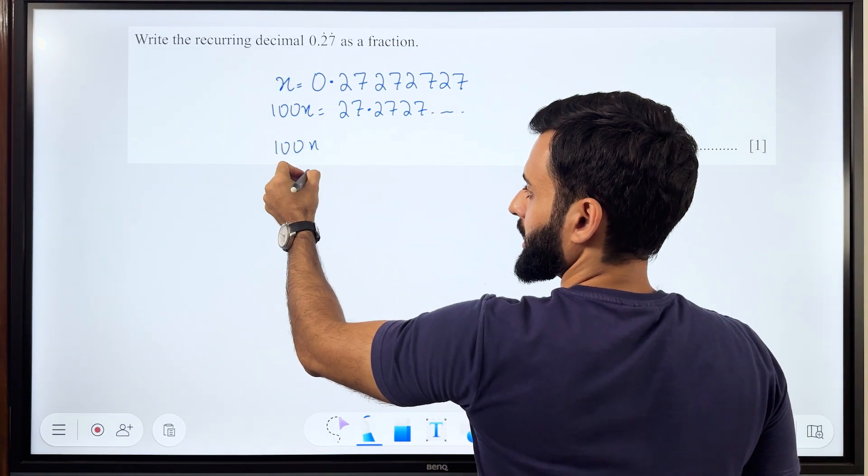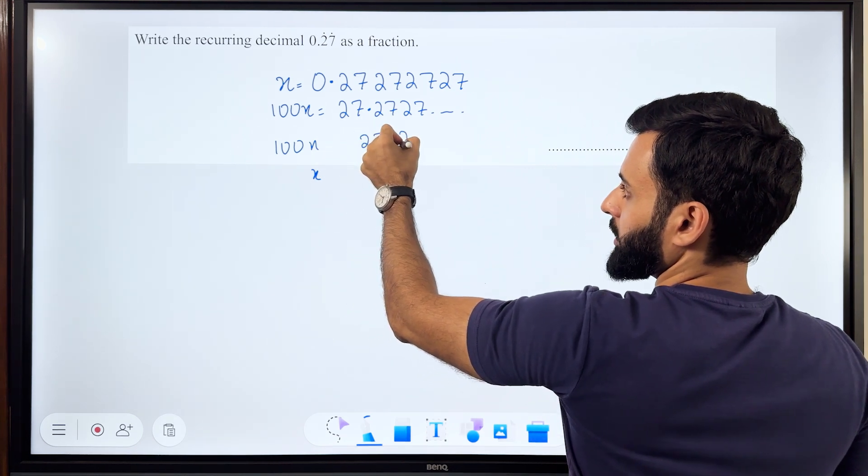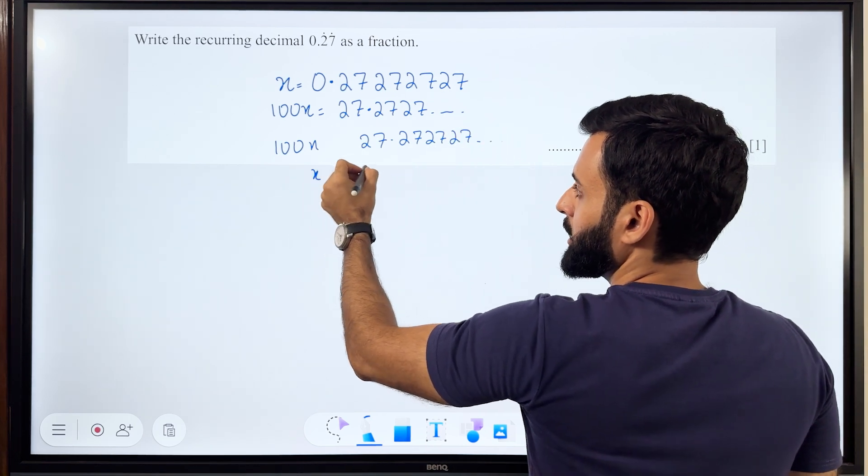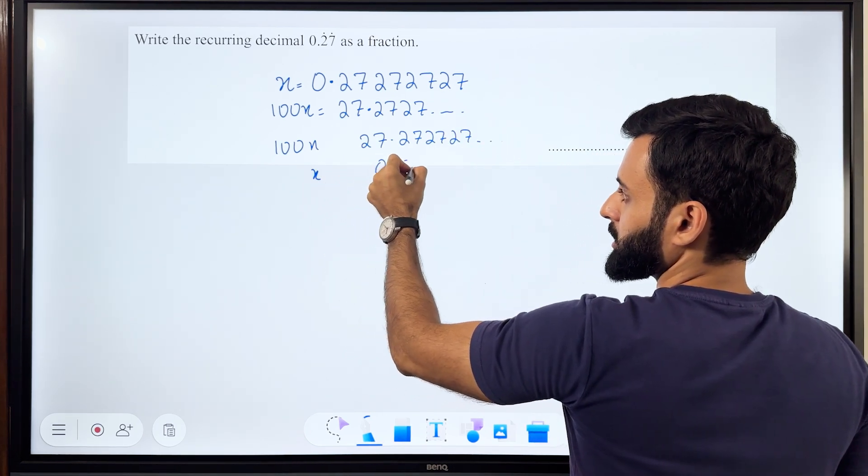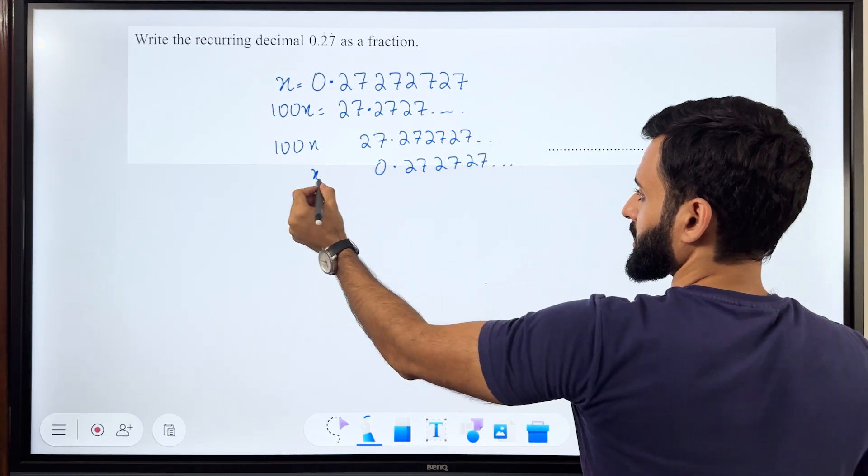100x minus x basically means 27.272727, the pattern continues forever, minus x which is 0.272727, once again the pattern continues forever.